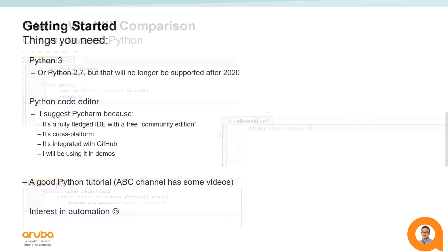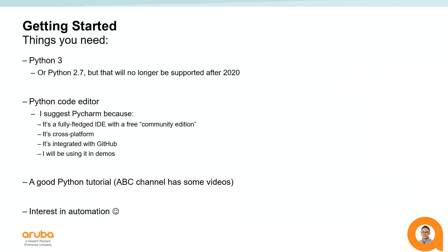There are only a couple of prerequisites to begin using Python to automate REST API operations. If you don't already have Python 3 installed, go ahead and install it. You could also use Python 2.7, but I don't recommend it since the official end-of-life date is next year in 2020 — you can future-proof yourself by getting on board with Python 3 now. You will also need an editor to write Python code in. PyCharm IDE — integrated development environment — is awesome because the community version is free and does everything you need. It allows you to run and debug code directly with just one click, and it also features GitHub integration.